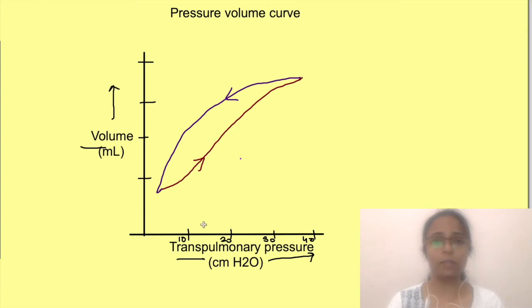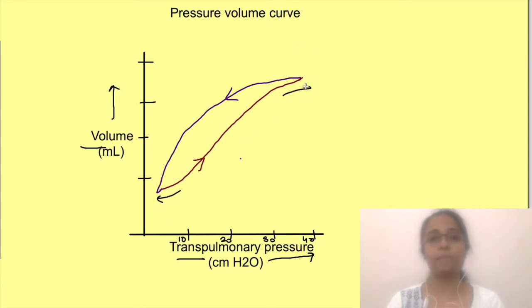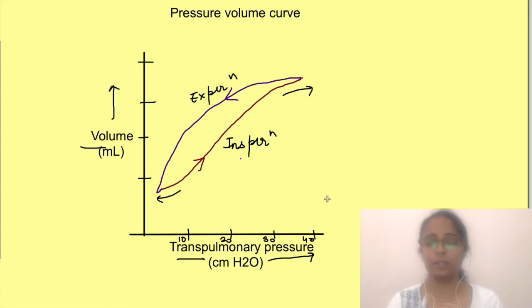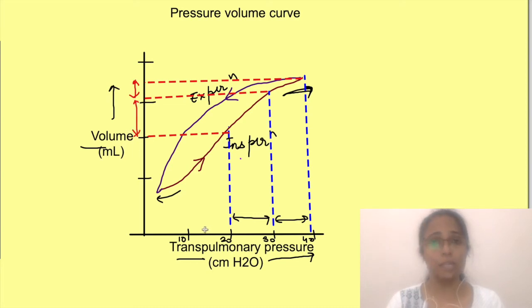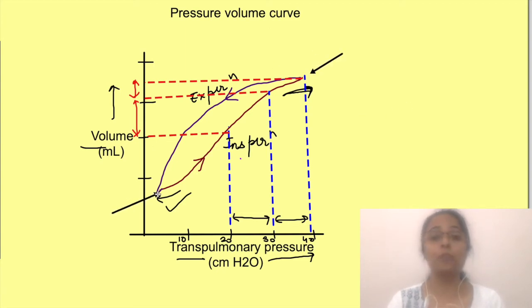Notice two things: first, the relationship between pressure and volume is not linear — the slope is flatter at the base and at the top. Second, the relationship differs during inspiration and expiration, with different curve lines. The flat regions mean that for a similar change in pressure, the volume change is less. At the top and at the base of the graph, volume change is smaller for the same pressure increment compared to the central portion — meaning lungs are stiffer at very high and very low lung volumes.